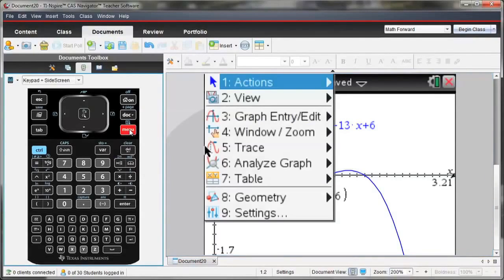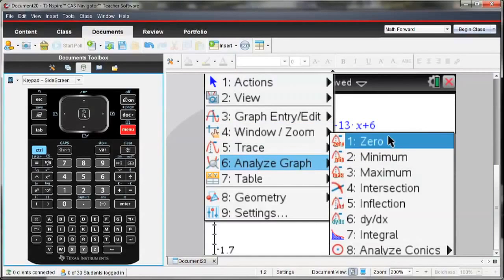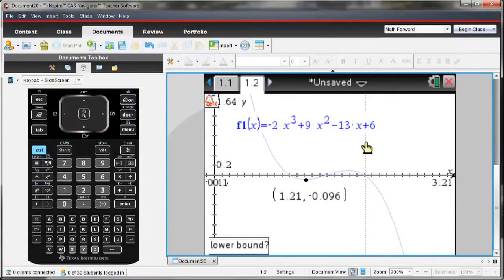Now likewise, I can also do this for my zeros. I'm going to select Menu, Analyze Graph, and Zero. Start my lower bound from the left of the zero you'd like to know and drag over so that the upper bound is just to the right. And notice as I did that, the zero value, where my zero occurred, showed up on the graph.